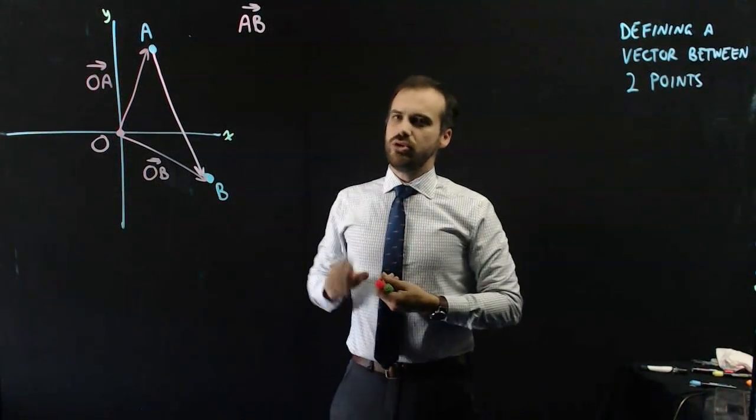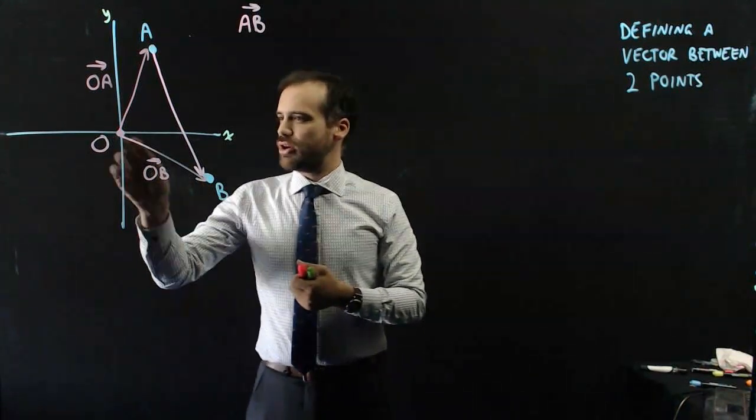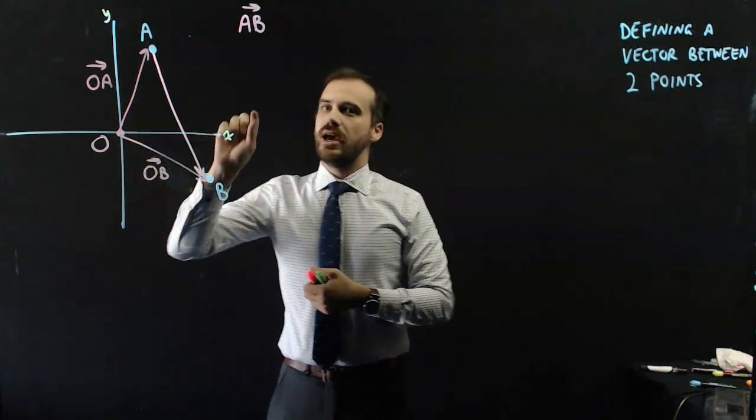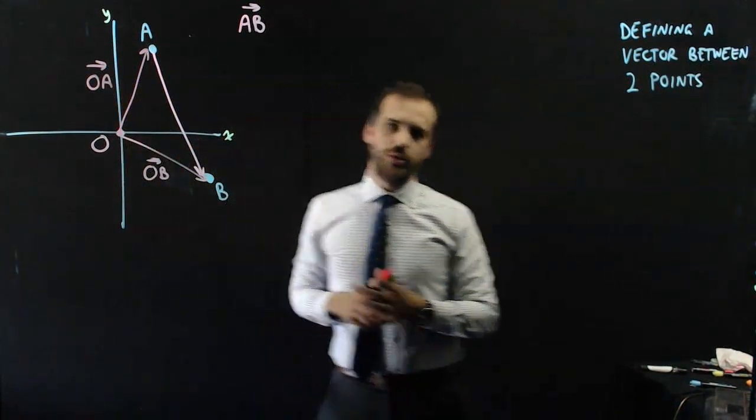All right, now, at this point, you might want to pause the video and think, okay, I've got a vector OB, I've got a vector OA. How can I express vector AB in terms of OA and OB?